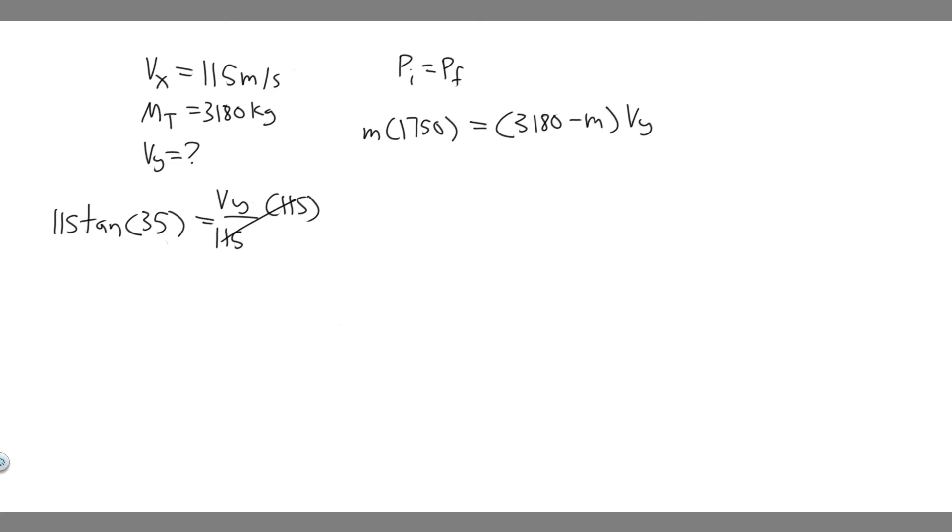And when you go ahead and do this, 115 times the tangent of 35, you'll get v sub y equals 80.5238, and so on. I'm just going to round to 80.5. You can use the full number if you want. And then it's going to be meters per second. So now we have v sub y, so we can actually plug it in.